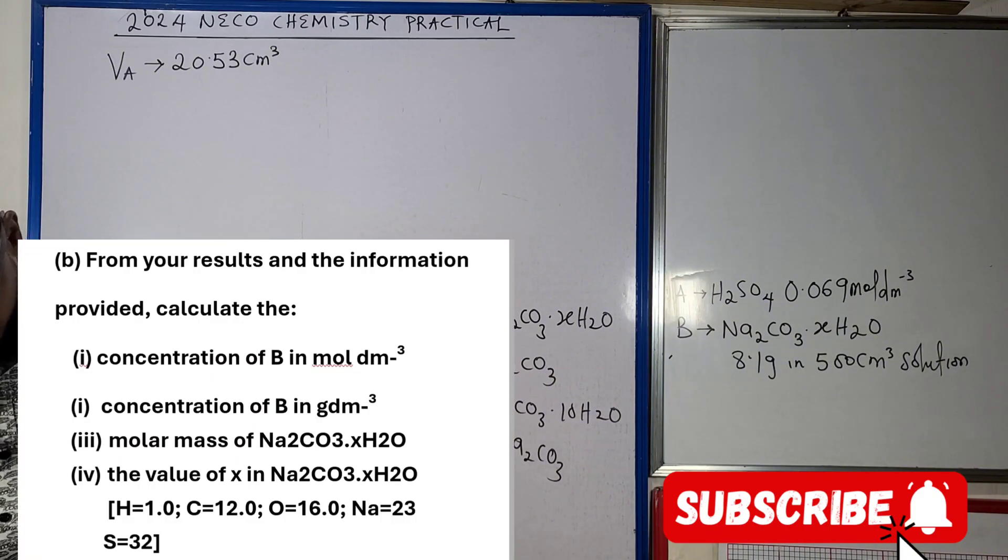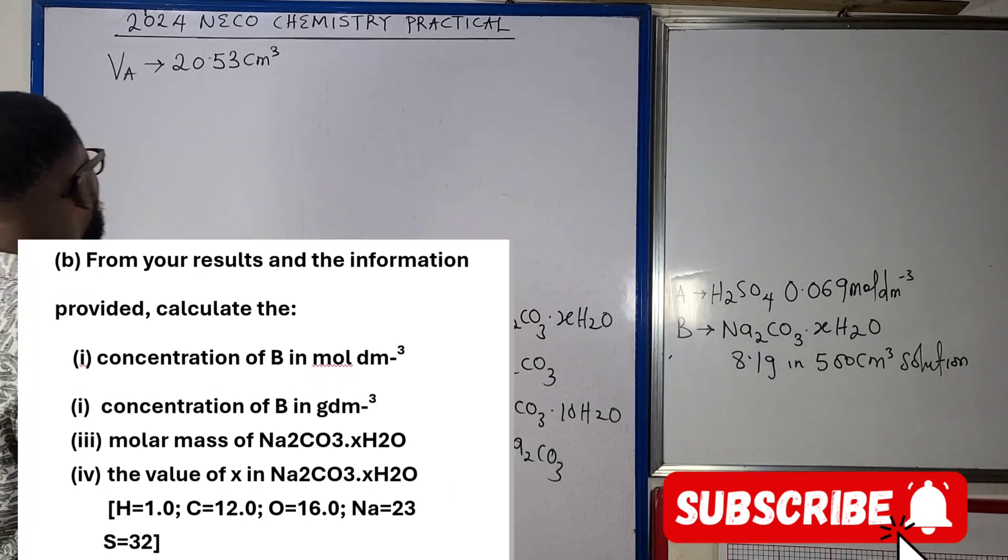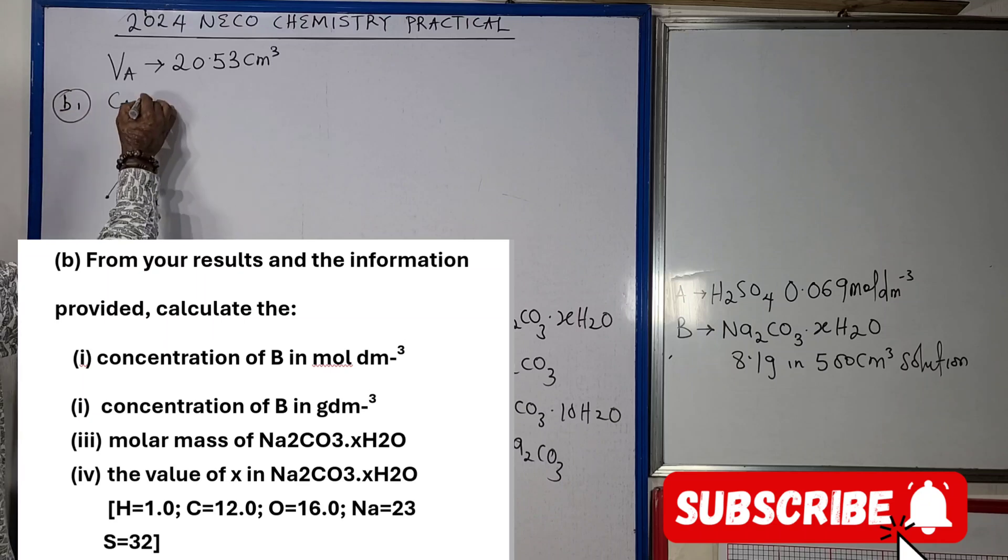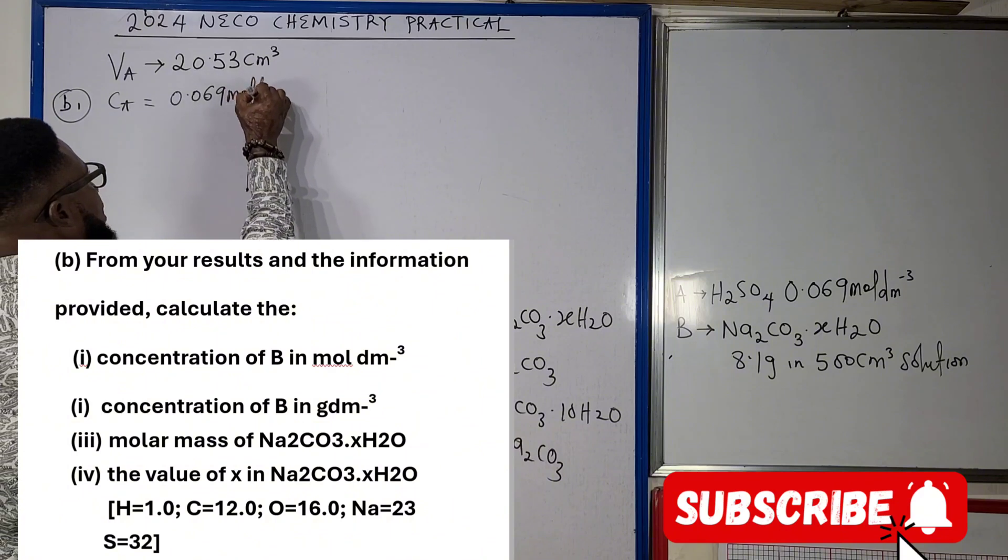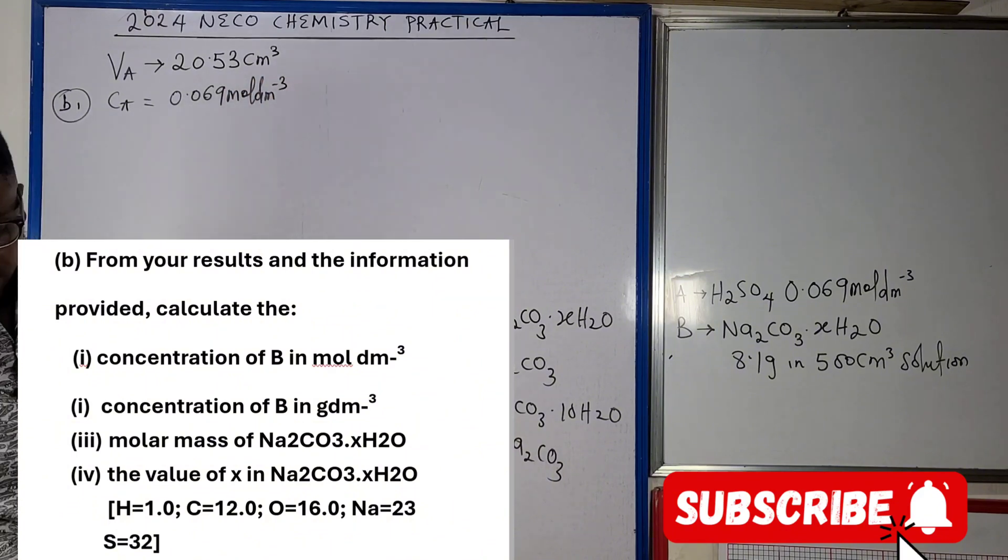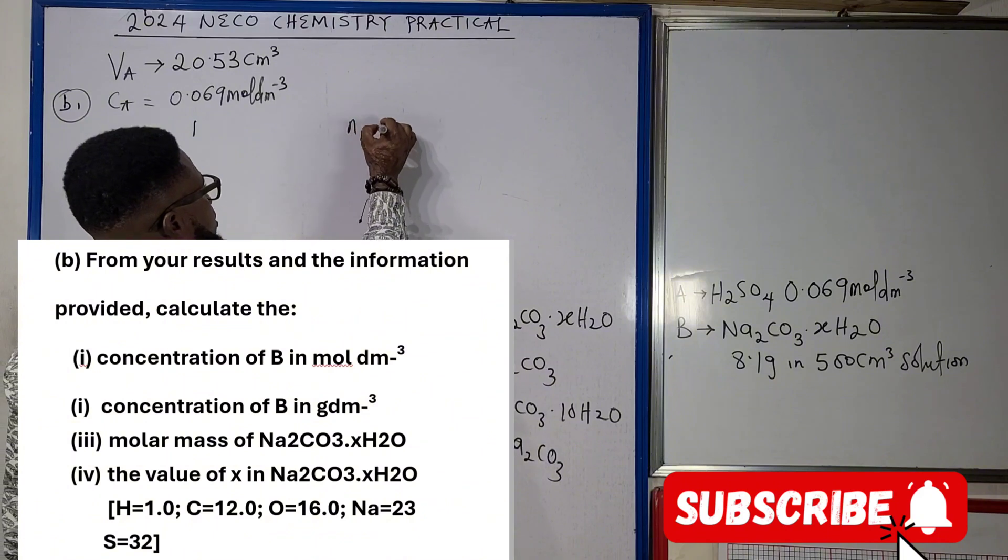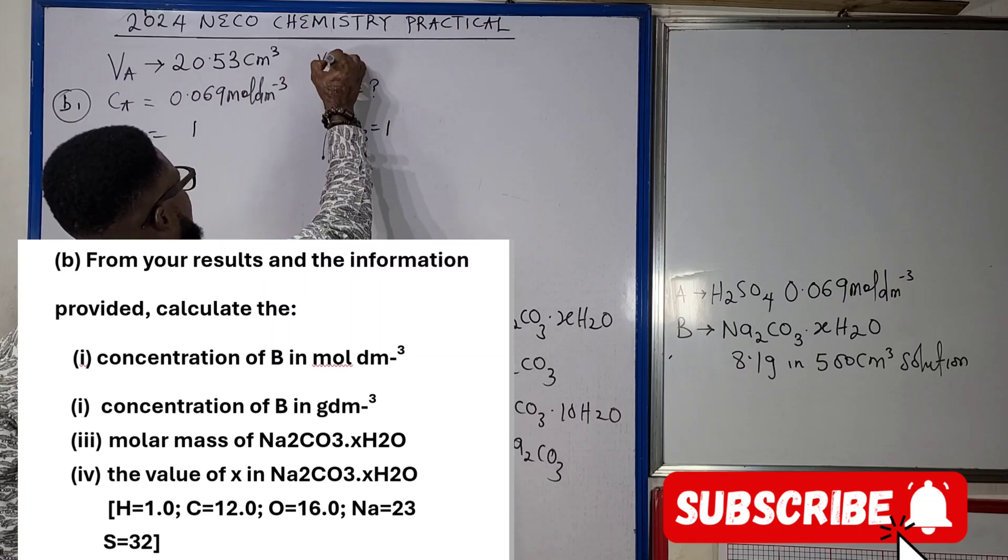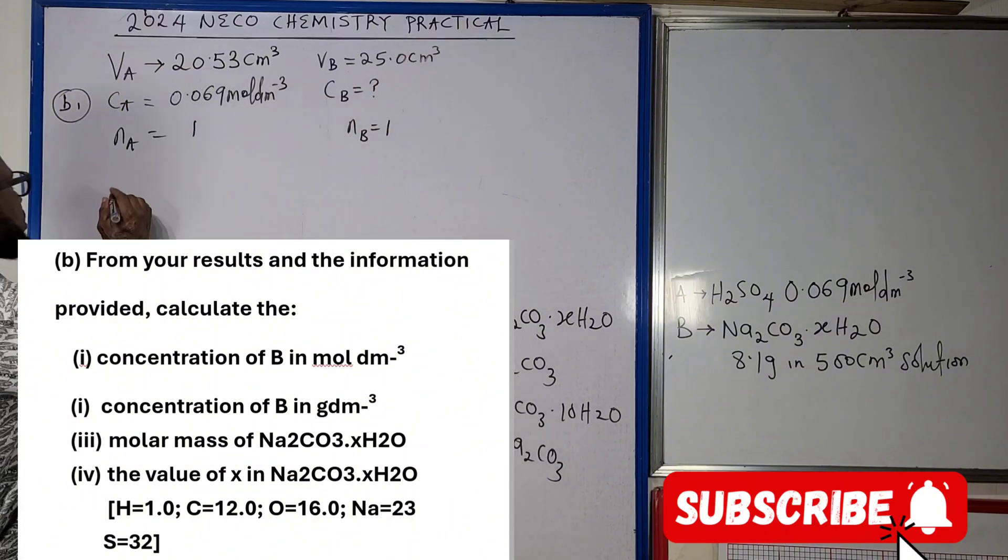From your results and the information provided, calculate concentration of B in mole per dm cube. Concentration of my A is actually 0.069 mole per dm cube. When you look at the question very well you can see the equation is one to one, so number of moles of my acid is one, number of moles of my base is also one. Concentration of my base in mole per dm cube is what I'm looking for, and my VB here is the volume of the pipette which is 25.0 cm cube in this case.